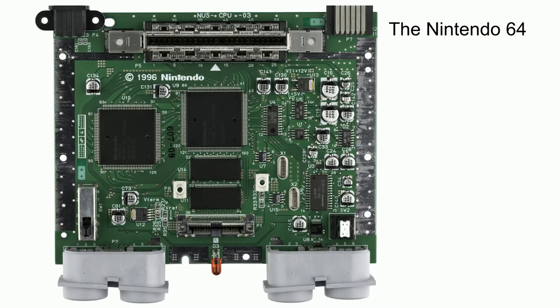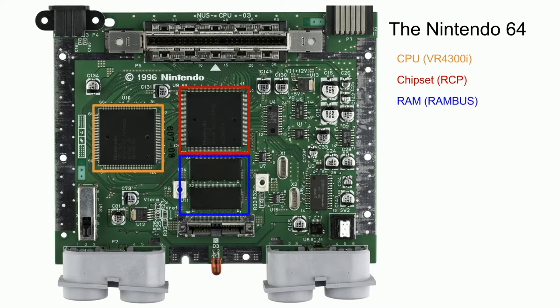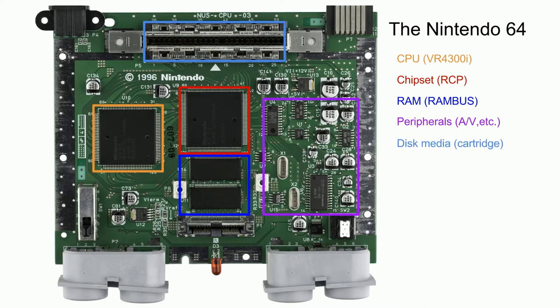One of the best examples is the Nintendo 64. Due to its elegant design, it is very easy to see the architectural layout by simply looking at the circuit board. First we have the CPU, which is the NEC VR4300. Next we have the chipset, which is the reality coprocessor, containing what is essentially the GPU, the Northbridge, and the Southbridge. Connected to the chipset is the main system memory, which were RAM bus based, a specific format like SDRAM and DDR. We also have peripherals, which included the audio-video synthesis chips as well as the controllers. And finally, there is the disk media equivalent, which in this case was a cartridge.